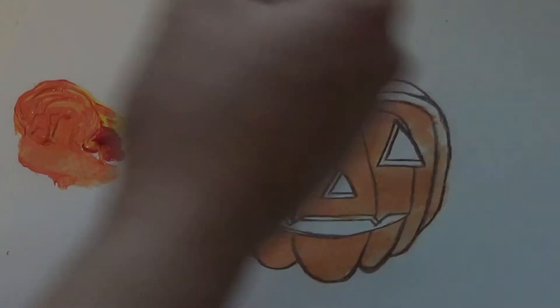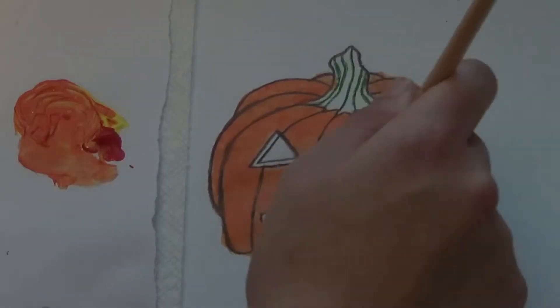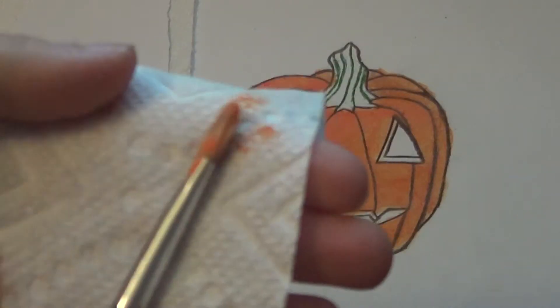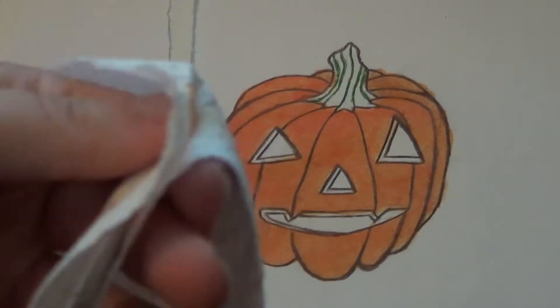So before we switch colors make sure you wash off your paint brush in water and also rub it against a paper towel to make sure you got all the color out and reshape it a little bit by pinching it.